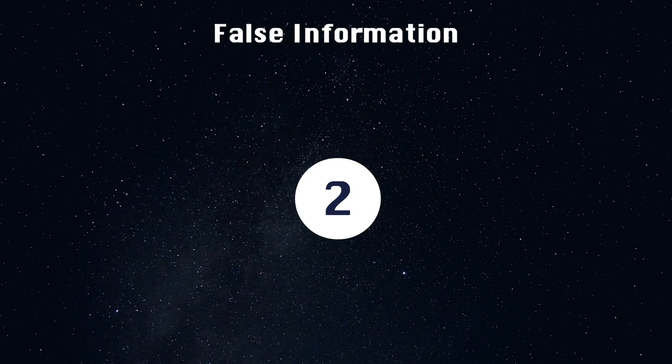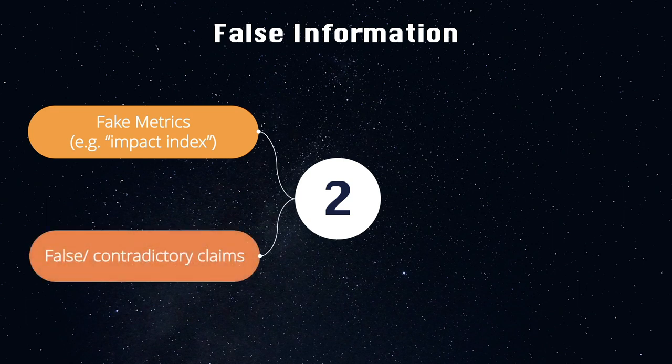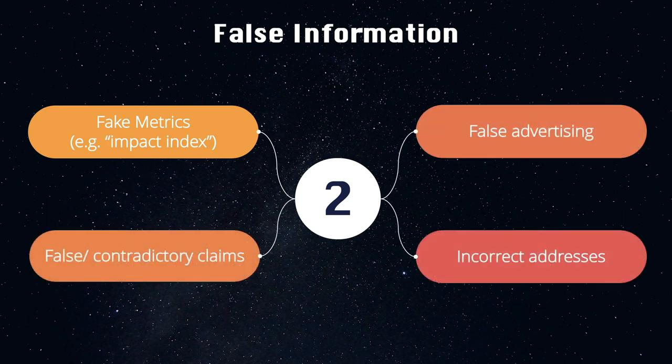The second red flag is false information. That includes having fake metrics such as impact index, false or contradictory claims, false advertising, and incorrect addresses.